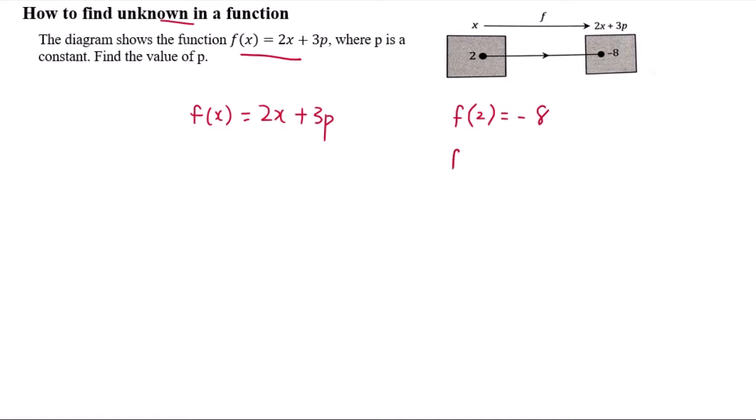So to do this, first we change the x into 2, we will get 2 times 2 plus 3p. We apply and substitute the 2 into the x. Then we know that f(2) is negative 8. We substitute negative 8 into f(2) and we will finally get this.